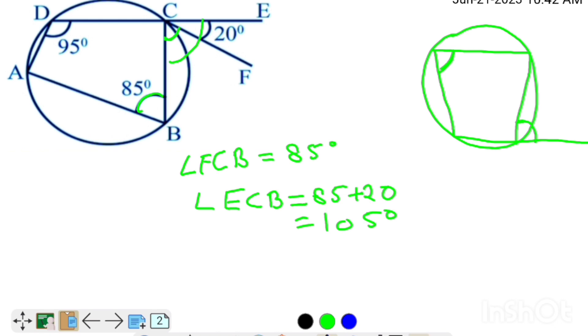This angle is 105, so this will be equal to this angle. So angle DAB will be equal to 105 degrees.